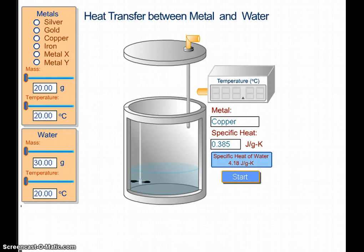As discussed in previous lectures, different substances have different heat capacities, meaning a different substance will require more energy to raise it to a certain temperature. For example, if you take a piece of copper and apply a certain amount of energy to it, it'll raise the copper by a certain number of degrees Celsius. However, that same amount of energy applied to a chunk of silver of the same mass is going to raise the temperature of the silver by a lot more.